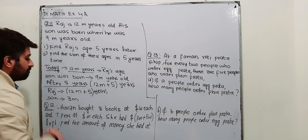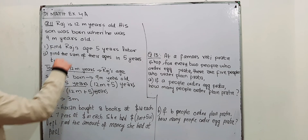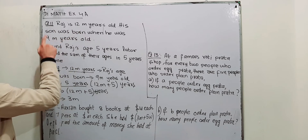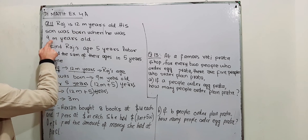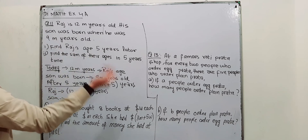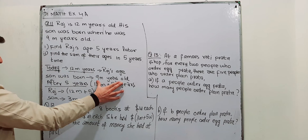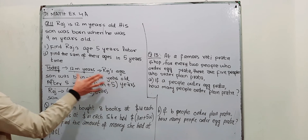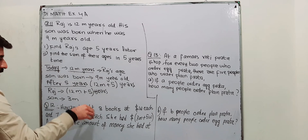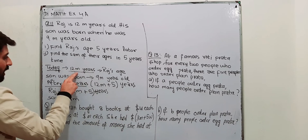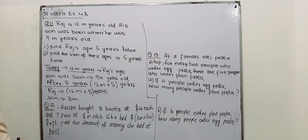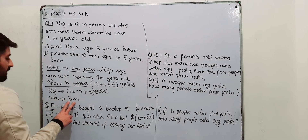How? Today Raj is 12m years old. At the time of birth of his son, Raj was 9m years old. Today he is 12m years old — that means today the age of his son is 12m minus 9m, which is 3m. This is the age of his son today.